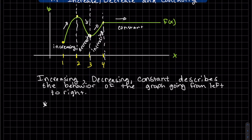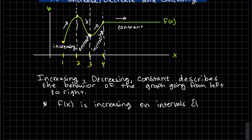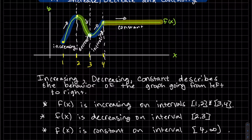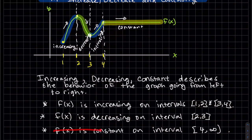Writing it out: the graph is increasing on the intervals from one to two, and from three to four. It's decreasing on the interval from two to three, and f of x is constant starting at four going on to infinity. So it's always described — increasing, decreasing, or constant — on an x interval.